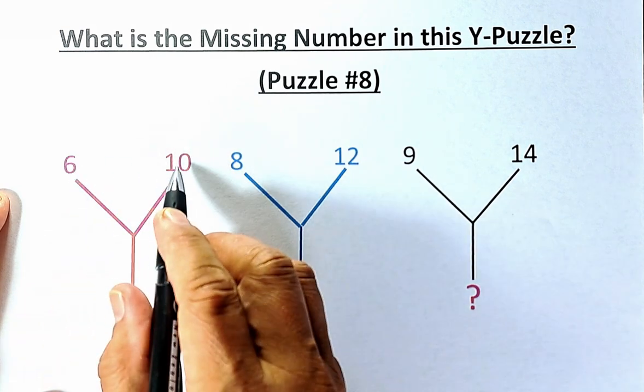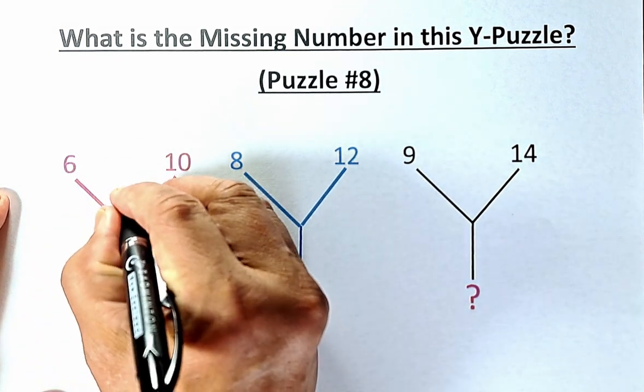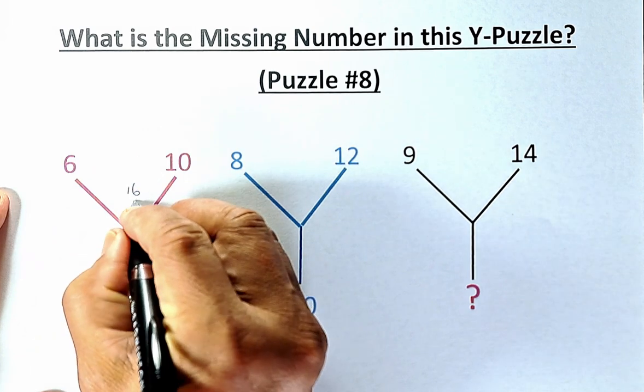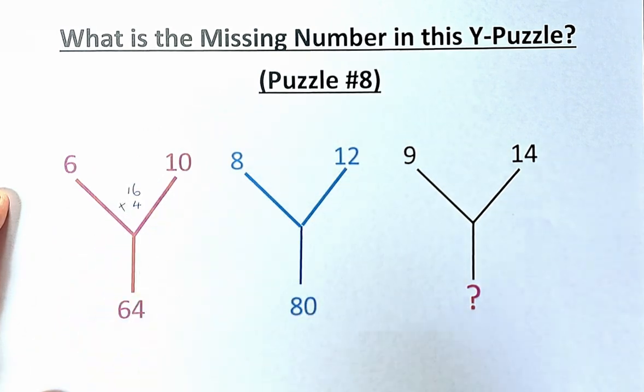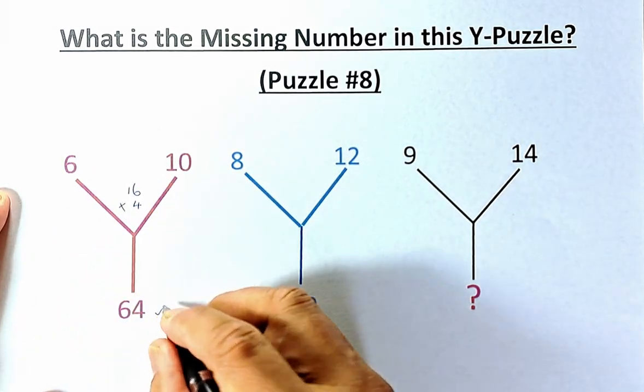6 plus 10 is 16. And then 10 minus 6 is 4. And then you multiply them. 16 times 4 and that is 64.